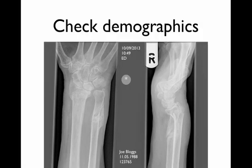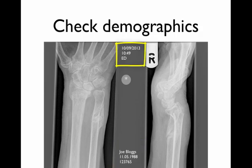Starting with checking demographics: the important things to check are that you've got the right patient — looking at their name, date of birth, and hospital number — and that you're looking at the x-ray you want, on the right day and time, and finally checking which side of the patient you're looking at.